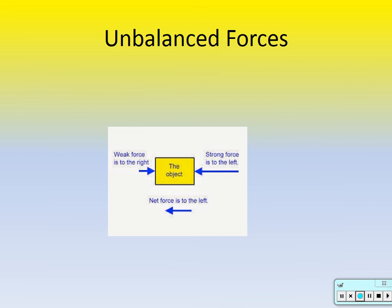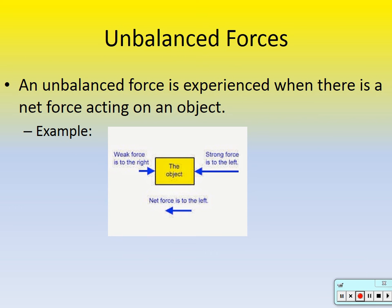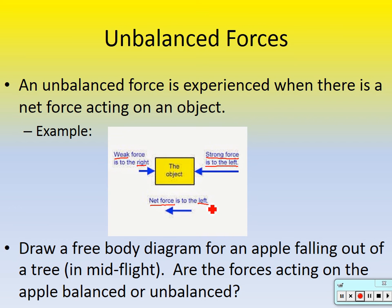An unbalanced force is experienced when there is a net force acting on the object — unbalanced equals a net force. Here's an example: this yellow object has a strong force to the left — that's why the vector arrow is much longer — and a very weak force to the right. The object will move to the left because there's a net force in that direction.